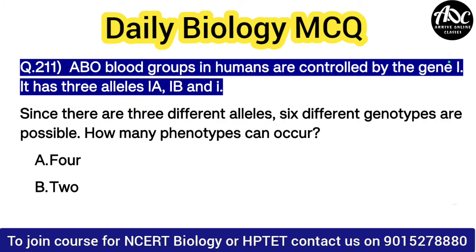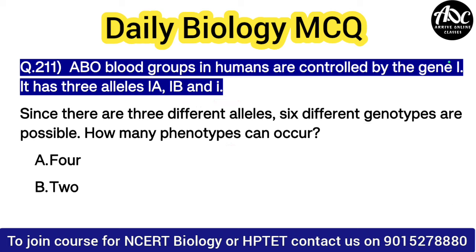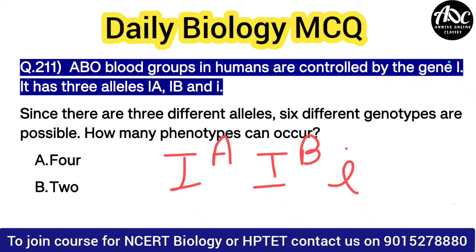You need to know some basic terms: what is genotype and what is phenotype. The ABO blood group in human beings is written as Ia, Ib, and small i. These three genes give us blood groups A, B, AB, and O.